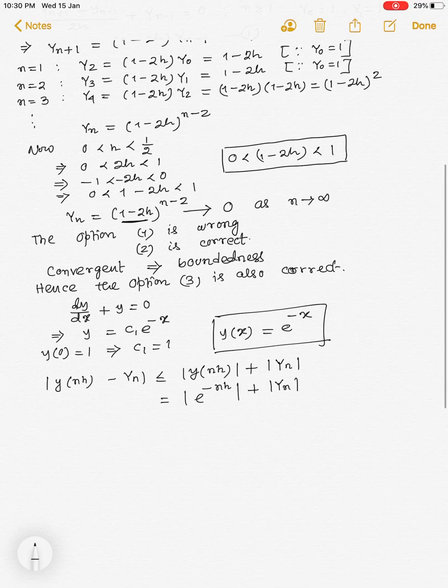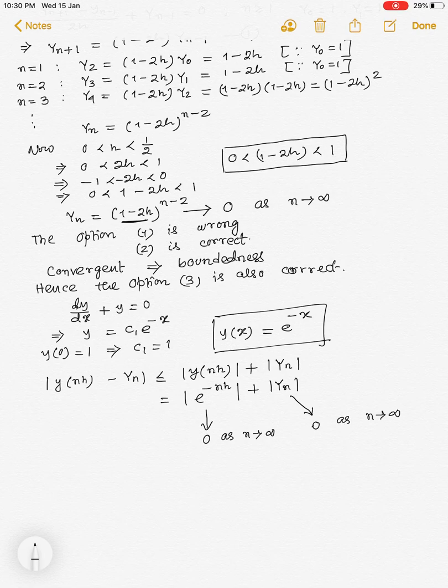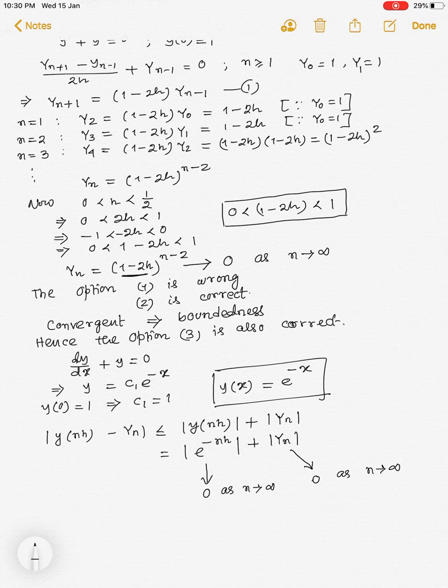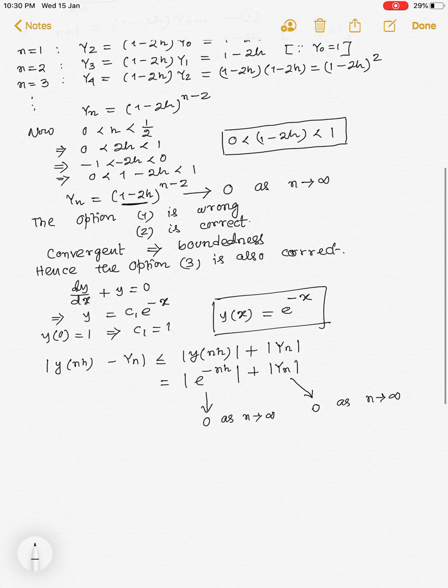Now, we see that as n tends to infinity, this |e^(-nh)| tends to 0 as n tends to infinity and this |yₙ| also tends to 0 from option 2 since the option 2 is correct.